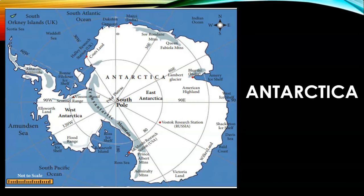Mount Erebus is an active volcano located on Ross Island. Antarctica is the only continent called the 'White Continent.' In some places its ice cap is 4,000 meters deep. Do you know scientists of any country are free to conduct experiments and collect data from Antarctica? Hence it is also called the 'Continent of Science.'